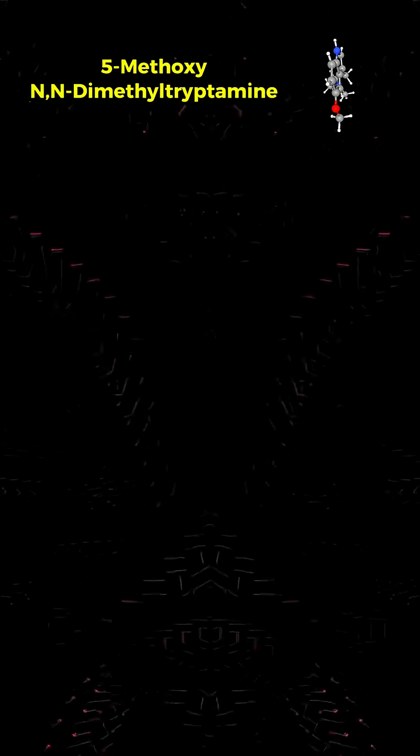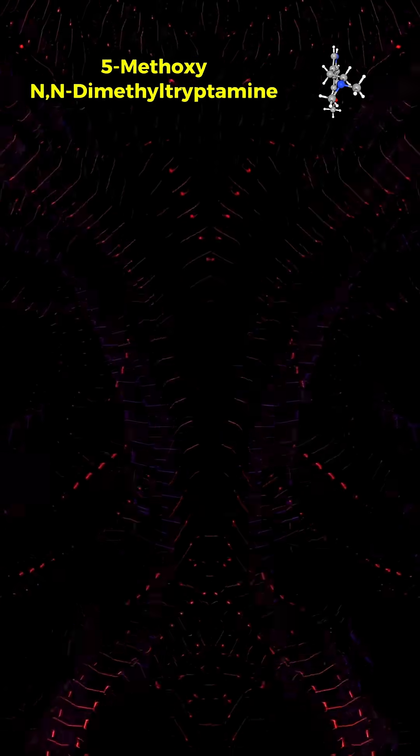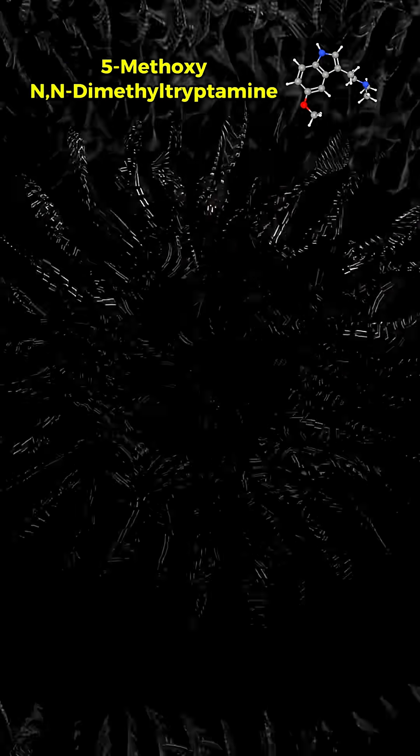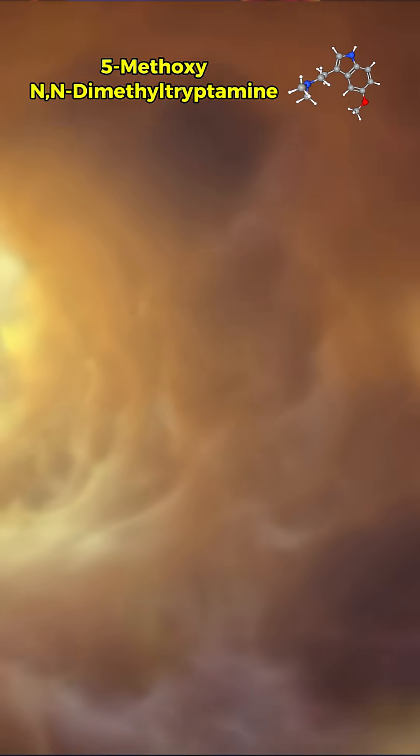Unlike the intricate geometric visuals associated with LSD or psilocybin, 5-MeO-DMT produces little in the way of colorful hallucinations. Instead, it often manifests as a blinding white light, total perceptual overwhelm, or a complete annihilation of external reality.